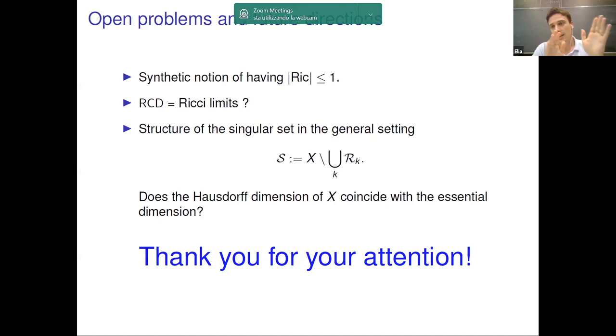So there is a trivial bound on the Hausdorff dimension, which is capital N. It has been refined in the setting of Ricci limit spaces. If I remember well, the bound is capital N minus one. But the natural conjecture is that the dimension of the singular set should be smaller than small n, the essential dimension. Should it be an integer? Yeah, exactly. The natural conjecture is small n minus two or small n minus one. But this is very far from proving.